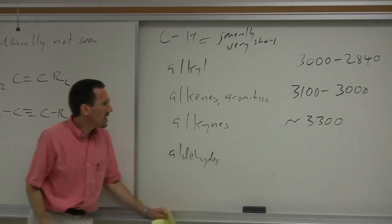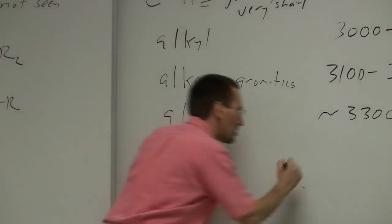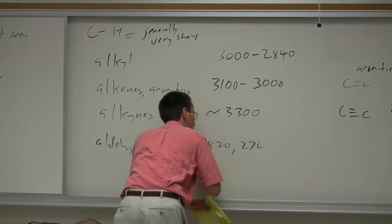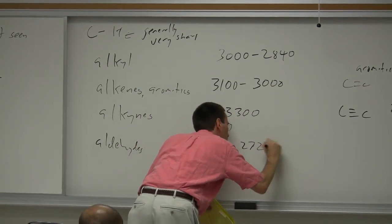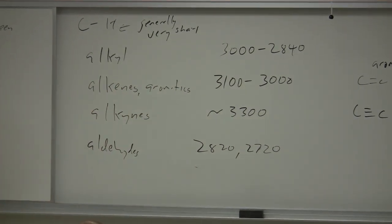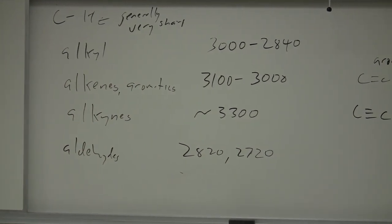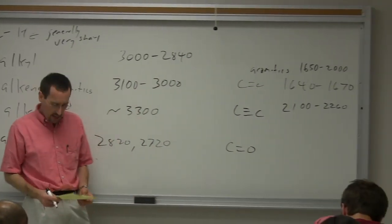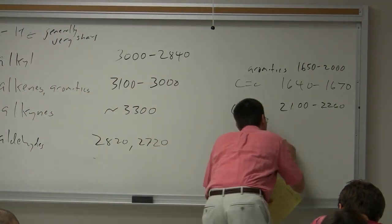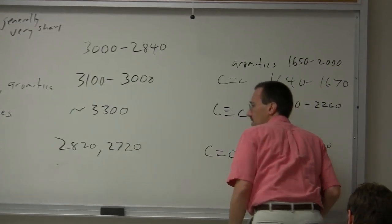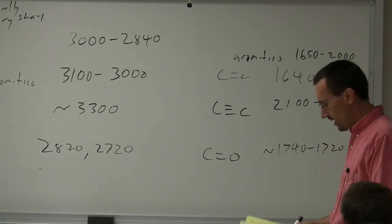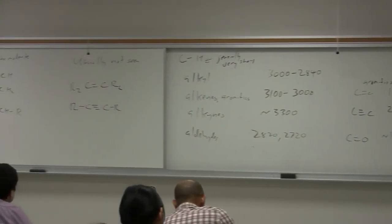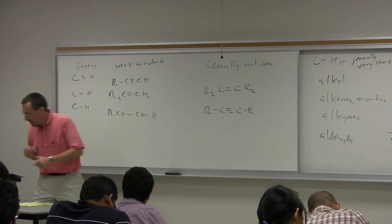The CH stretch of an aldehyde shows up as two bands. One of them — I believe it's at 2,820 — is the actual CH stretch, and the other is an inactive band pumped by it called a Fermi resonance at about 2,720. That will go along with your carbonyl. Looking around 1,700 — about 1,740 to 1,720 — would be typical for an aldehyde carbonyl, possibly lower if there's conjugation.